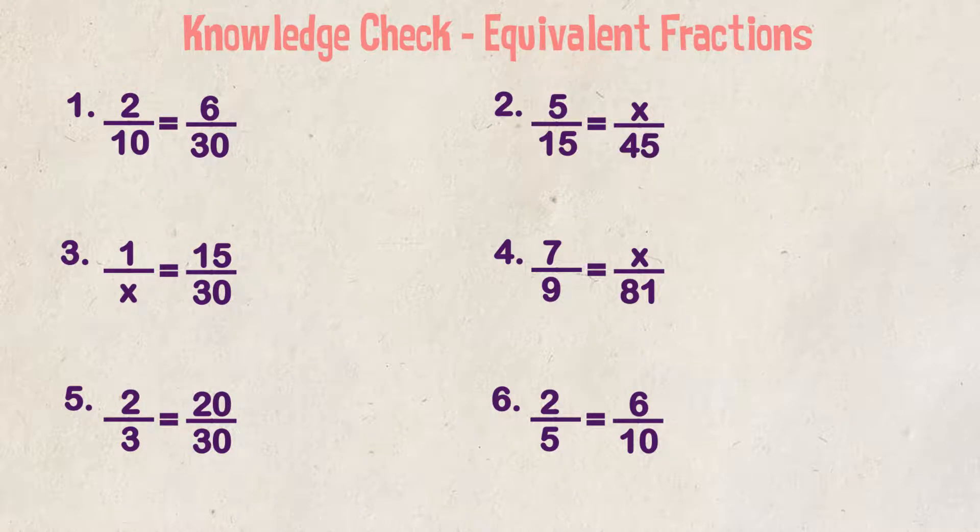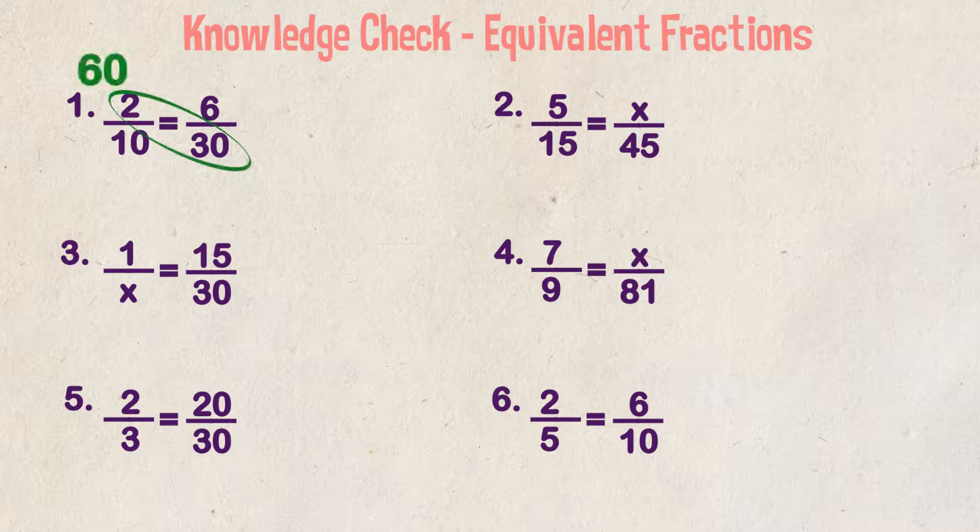Another way to look at it is by using cross multiplication, which means multiplying the numerator of one fraction times the denominator of the other fraction, and vice versa. We take 2 times 30 and we get 60. Now what number times 10 equals 60? 6. So that's the numerator of our second fraction.